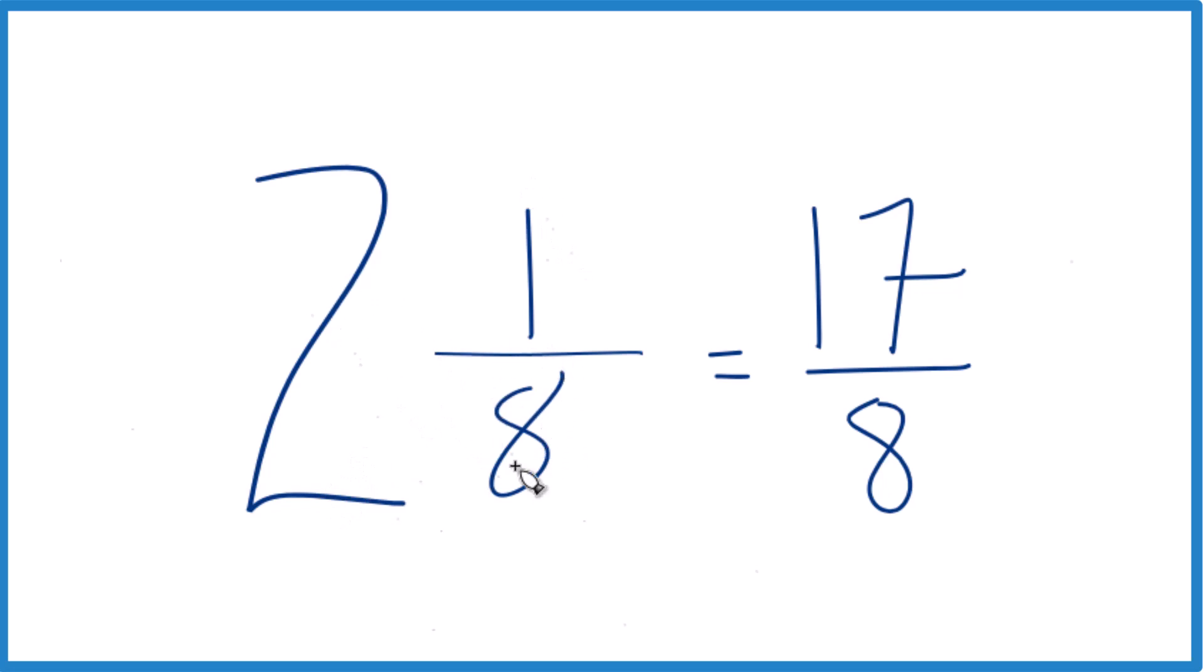Let's do it again. 2 times 8 is 16. 16 plus 1, that's 17. That's our numerator. Bring our denominator across. You got it.